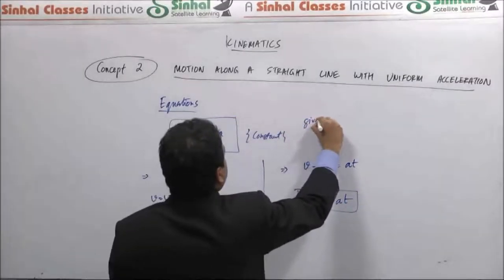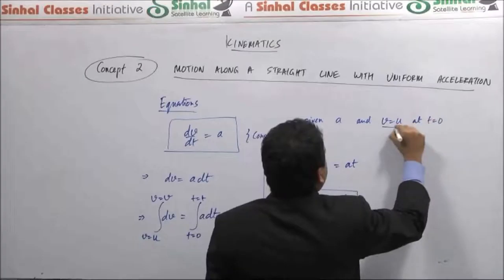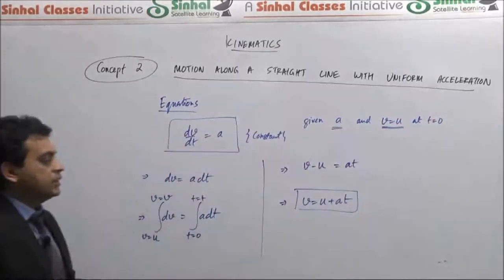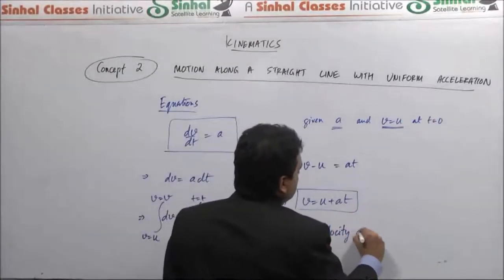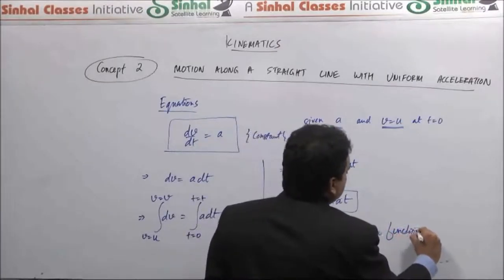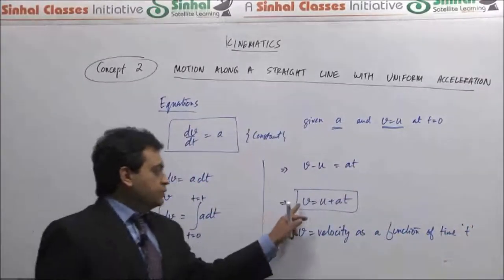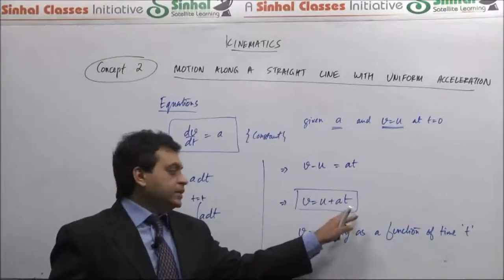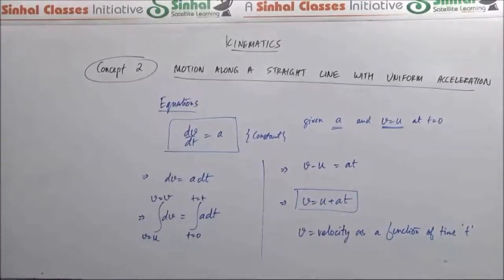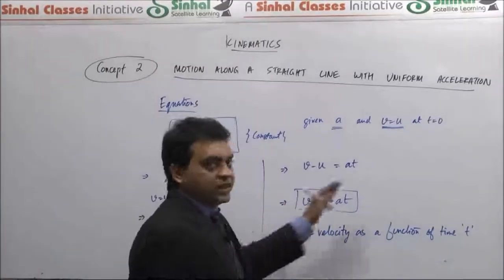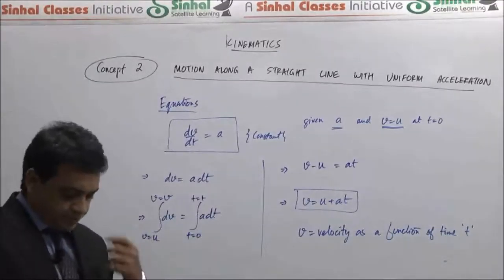Given acceleration a and initial velocity u at t = 0, this gives us v as a function of time t — velocity as the dependent variable with time as the independent variable, and u and a as constants. For example, if acceleration is constant and positive, the velocity vs. time graph is a straight line with positive slope; if a is negative, it is a straight line with negative slope.